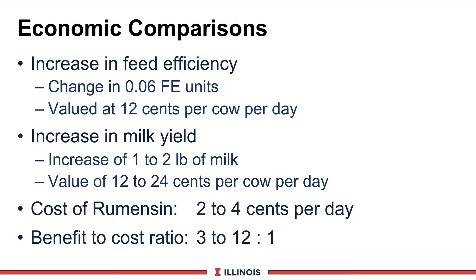Another key consideration is economics. Based on the FDA approval information, the change in feed efficiency was 6 hundredths of a point. If we value 1 tenth unit increase in feed efficiency at 20 cents — a conservative number — this is an increased value of 12 cents per cow per day. If milk increases 1 to 2 pounds per day but butterfat does not change, this could add another 12 to 24 cents per day based on $12 milk. The cost of rumensin would be 2 to 4 cents per day depending on markup, giving a benefit-to-cost ratio ranging from as low as 3 to as high as 12 — a very good benefit-to-cost ratio.